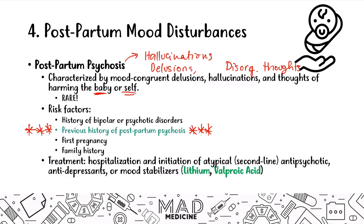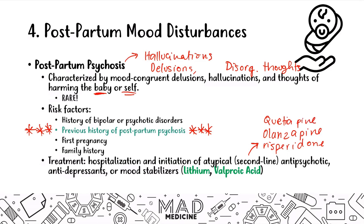When it comes to second-generation antipsychotics for USMLE Step 1, the main ones to know are olanzapine, risperidone, and quetiapine. Additionally, electroconvulsive therapy can be used because some drugs can affect the child through breast milk.